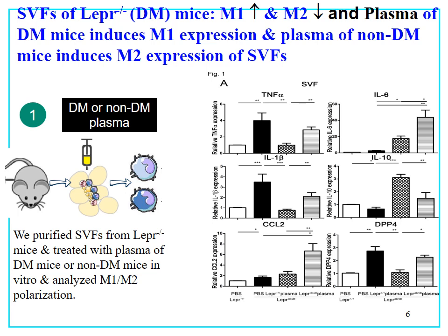Next, we treated the SVF from the adipose tissue of db/db mice with either control plasma or plasma from db/db mice. We found that control plasma decreased TNF-α, IL-1β, and DPP4, but increased IL-10 in SVF from db/db mice. However, plasma from db/db mice did not decrease TNF-α, IL-1β, or DPP4, and did not increase IL-10, but did increase CCR2 in SVF from db/db mice.